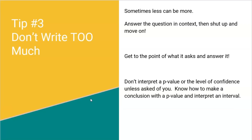Tip number three: don't write too much. Sometimes less is more. Answer the question in context, then stop and move on. Get to the point of what it asks and answer it. Students will panic and keep adding things, eventually saying something wrong or irrelevant. Keep it simple. Don't interpret a p-value or level of confidence unless asked. Sometimes trying to do too much wastes time or leads to something wrong, and you might get a deduction for it.